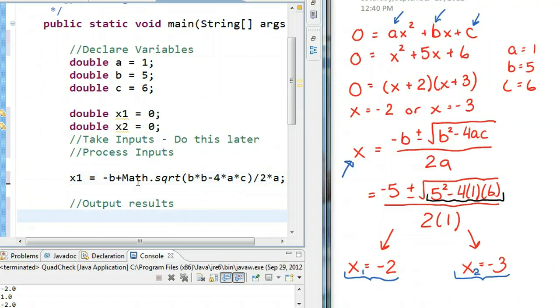And, then I'm going to say b times b minus 4 times a times c divided by 2 times a. So, now, I've plugged this in. And, if we output it, System.out.print, I should get a value of negative 2 or minus 3. So, let's run this and see what happens. I don't.